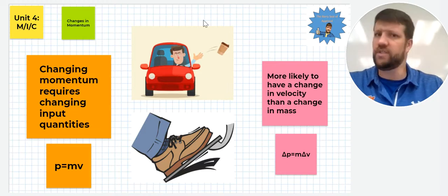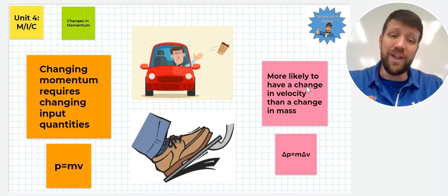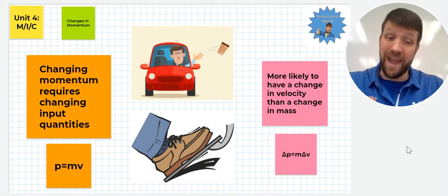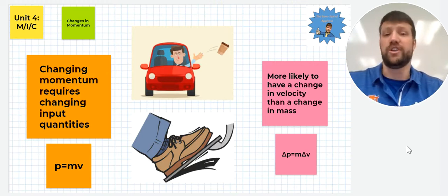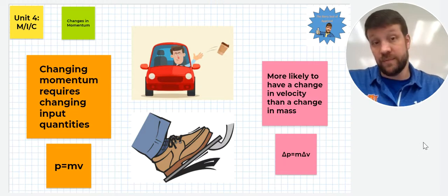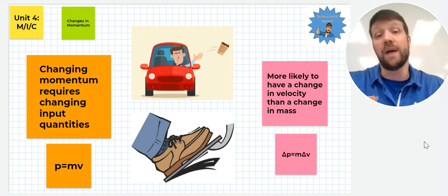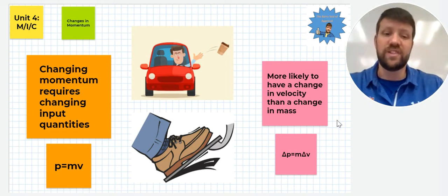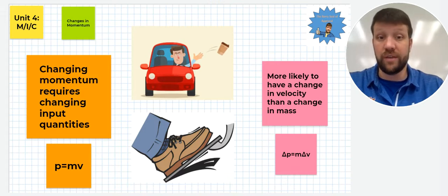Between the two of these, one is much more common and happens much more often. It's more likely to have a change in velocity than a change in mass. Typically when we refer to a change in momentum, we're referring to a change in momentum because there is a change in velocity. It's less often that you have a change in mass for an object that's already moving.